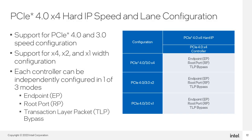The by-four PCIe controller supports GEN-4 and GEN-3 speed configurations. You cannot directly configure the controller for GEN-2 or GEN-1 speeds; those speeds can only be achieved via link-down training during link configuration. Each controller supports by-four, by-two, and by-one width configuration. All speed and width configurations of the by-four hard IP can be configured as endpoints, as root ports, or in transaction layer bypass mode. TLP bypass mode allows you to bypass most of the transaction layer of the hardened controller to implement your own transaction layer in the FPGA core logic, supporting PCIe features not native to the GTS PCIe controller.